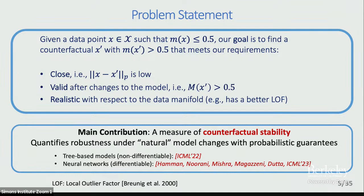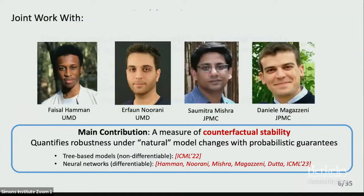I started looking at this problem while I was at JP Morgan, where they were more interested in tree-based models, which are non-differentiable. But now we are also looking into neural networks, which are inherently differentiable. For differentiable models, we find that the model's local Lipschitz behavior actually plays an important role in determining whether the point is going to be robust or not. This is joint work with my PhD student Faisal Irfan, who is another PhD student at UMD, and Samitra and Daniele from the explainability team at JP Morgan.